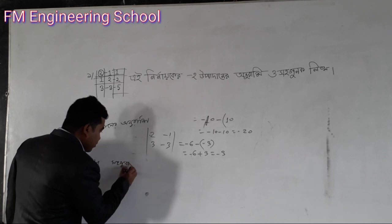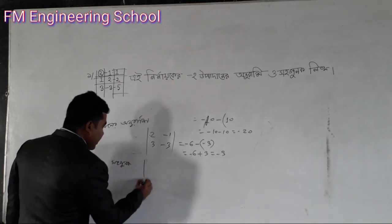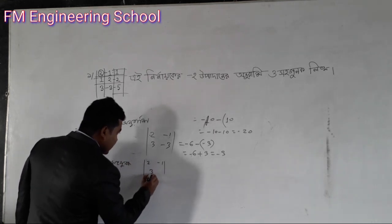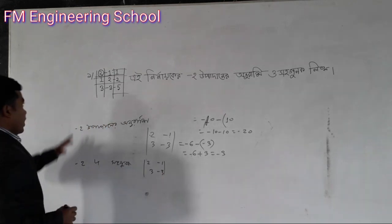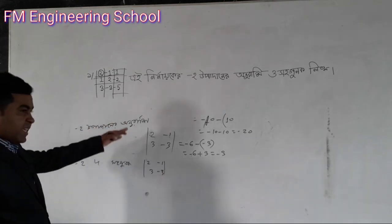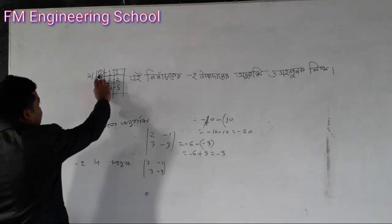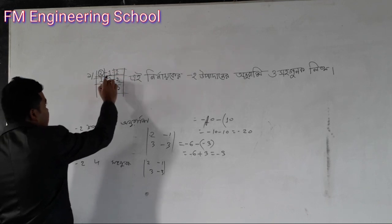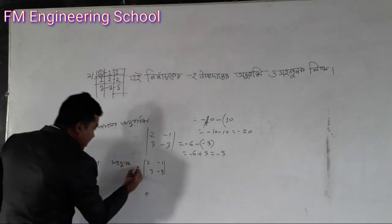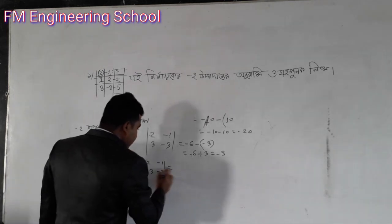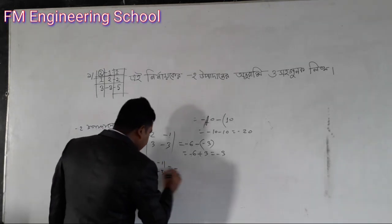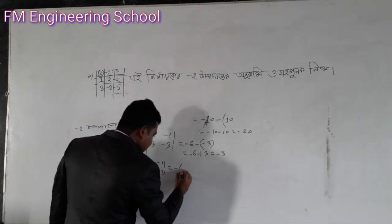In the same way, it will be 2 minus 1, 3 minus 3. This will be a side, so what is it? Plus, minus, plus. Minus, plus, minus. The meaning of minus 3 will be minus 3.